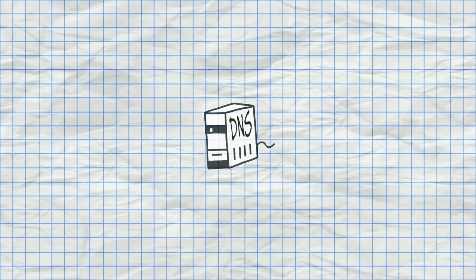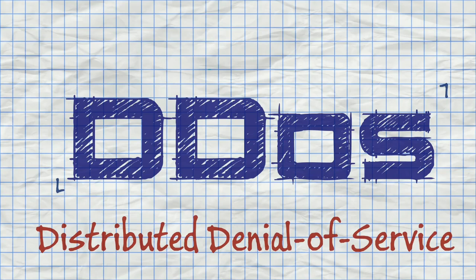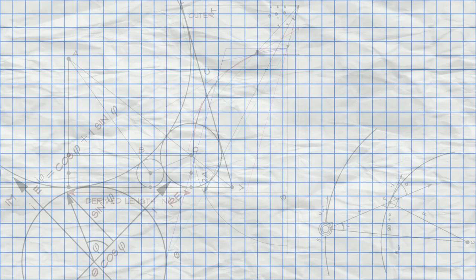So now you're thinking: the DNS got hacked, I get it. Except no — the hackers never took control of the DNS. To understand what they did, we need to understand the other half of this attack: DDoS, a distributed denial of service attack.